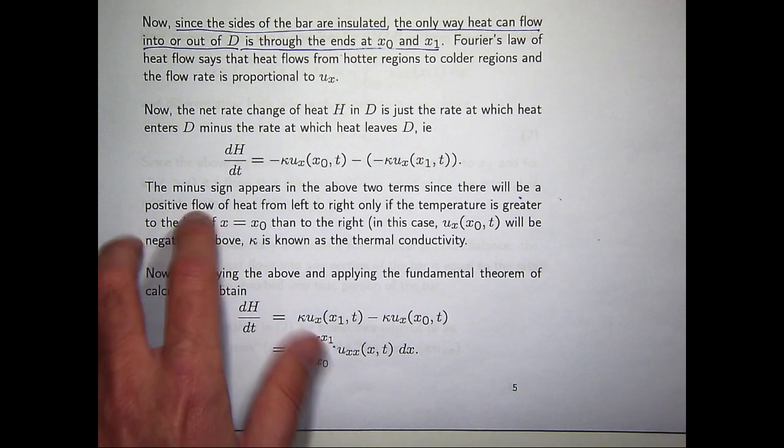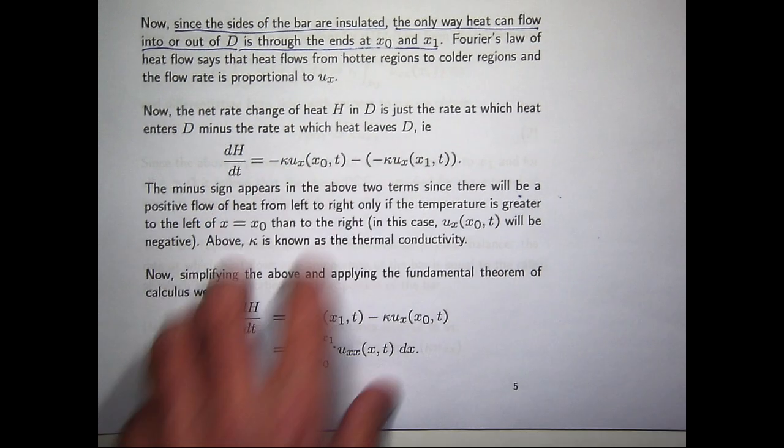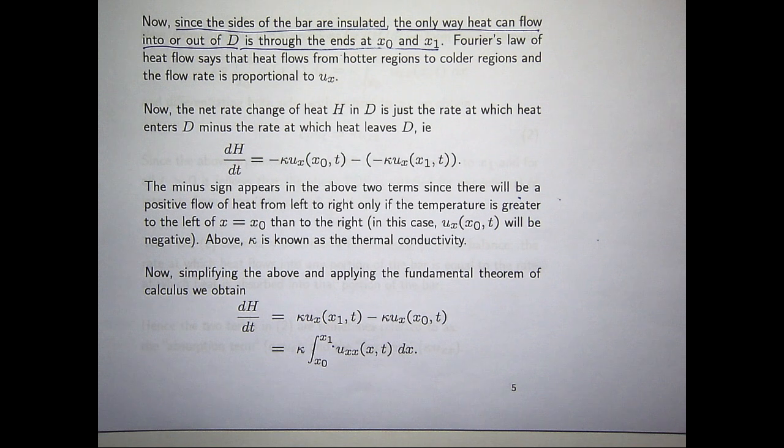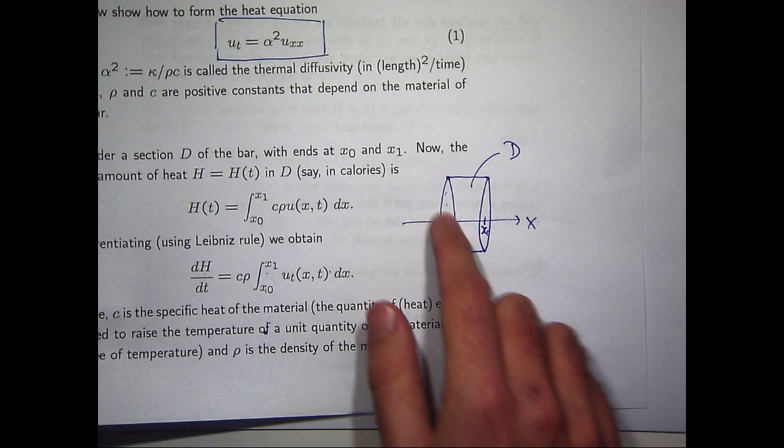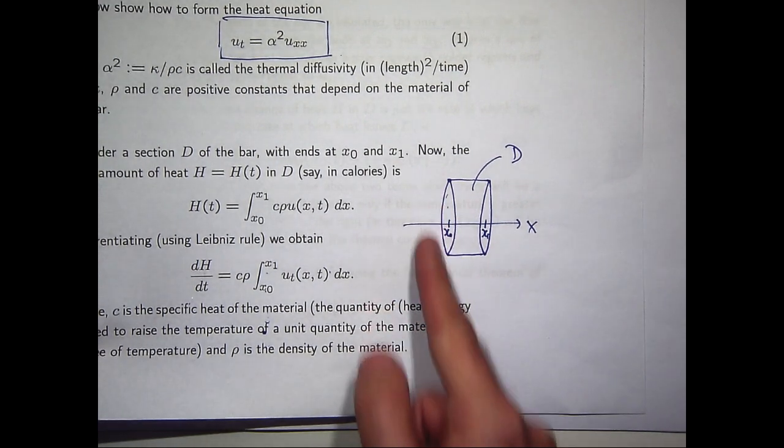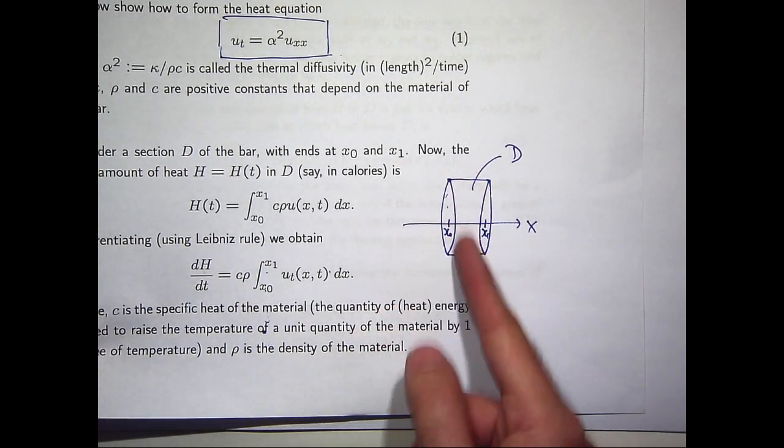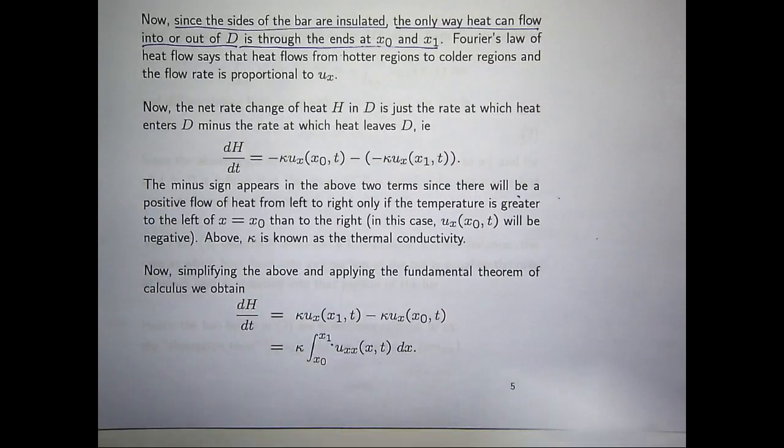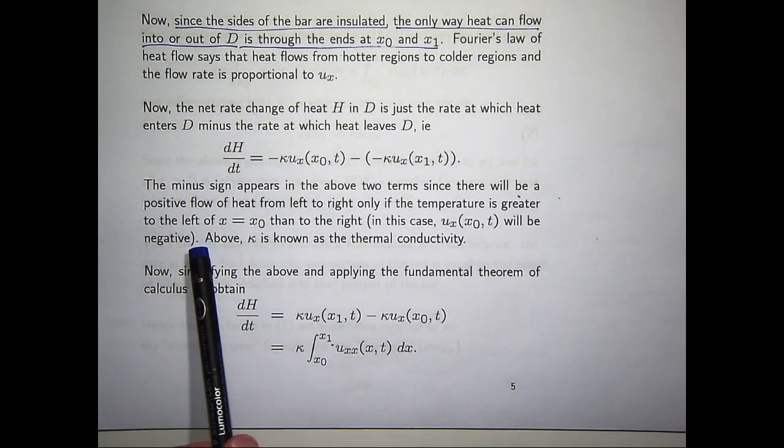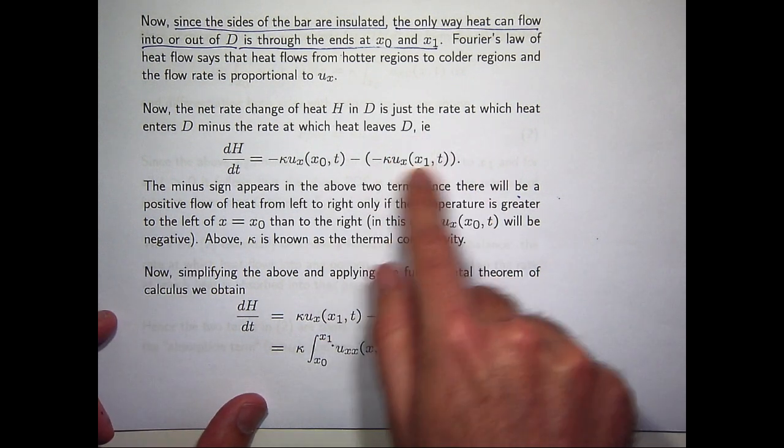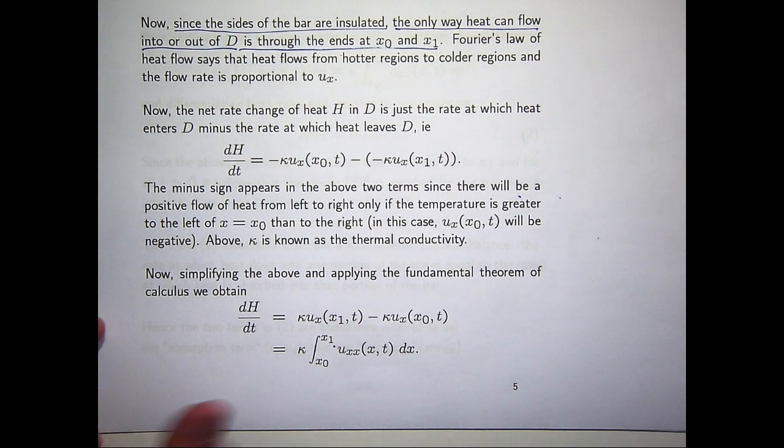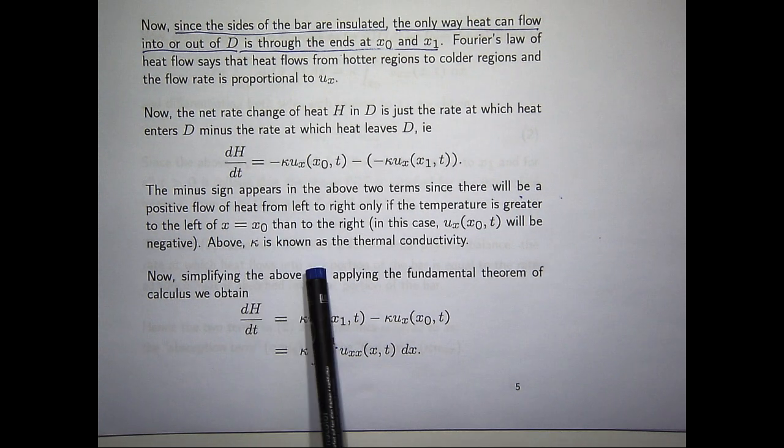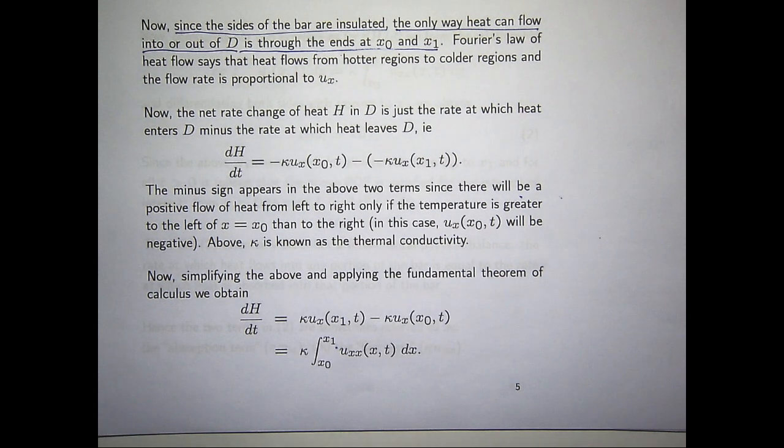Now, we've got minus signs in there, there and there, because there will be a flow from left to right if and only if the temperature, say, at x0, on this side is greater than the temperature on this side. In that case, it means that this derivative will be negative. And you can make a similar argument for this case as well. Now, the kappa here is just the thermal conductivity constant.